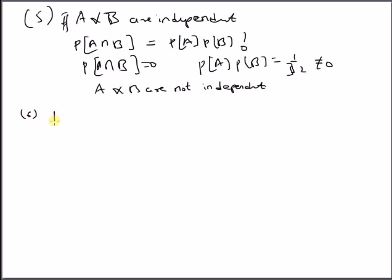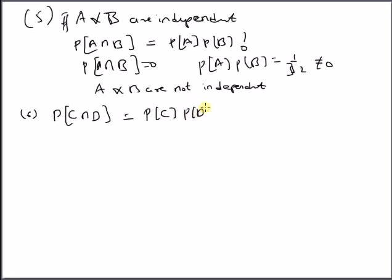The next question is probability of C∩D. Given that C and D are independent, probability of C∩D equals probability of C times probability of D, which is 5/8 times 3/8, that is 15/64.